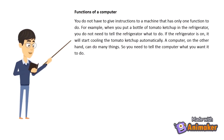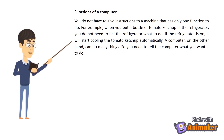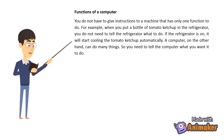You do not have to give instructions to a machine that has only one function to do. For example, when you put a bottle of tomato ketchup in the refrigerator, you do not need to tell the refrigerator what to do. If the refrigerator is on, it will start cooling the tomato ketchup automatically. A computer, on the other hand, can do many things.